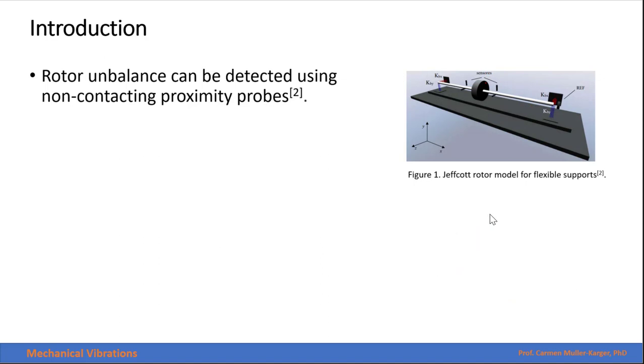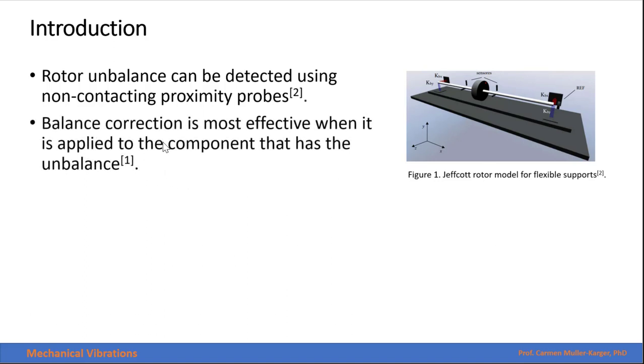The rotor unbalance can be detected using non-contact proximity probes. Here you can see those in this rotor motor for flexible support. The balance correction is most effective when it's applied to the component that has the unbalance.